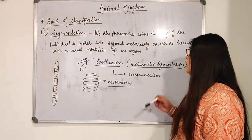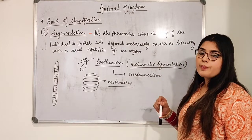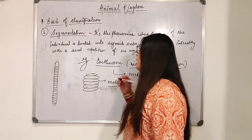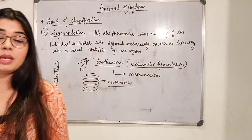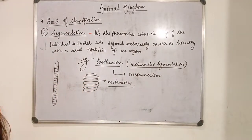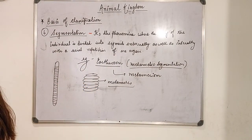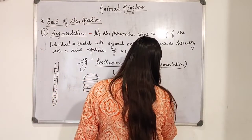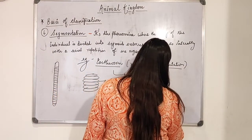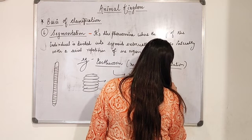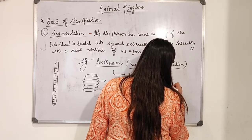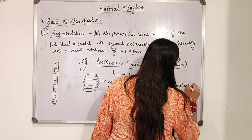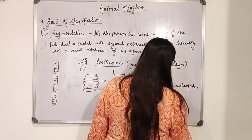Metameric segmentation is shown here. The examples of phyla which show this segmentation are Annelida, Arthropoda, and Chordata.